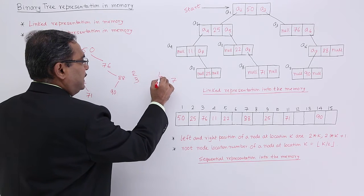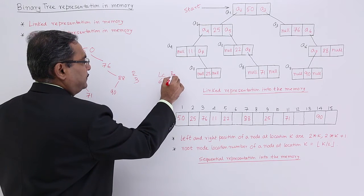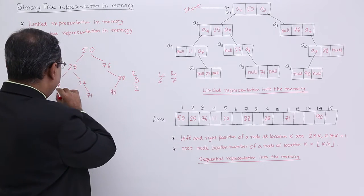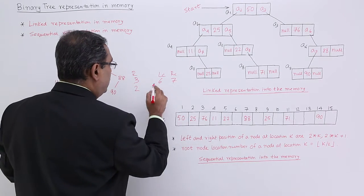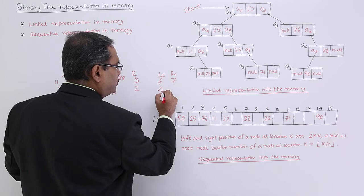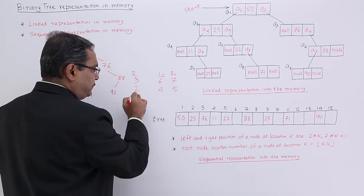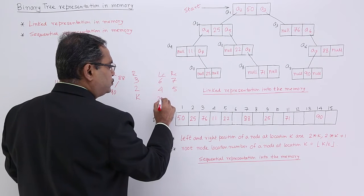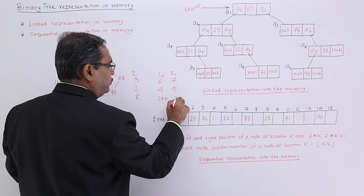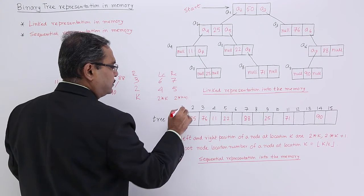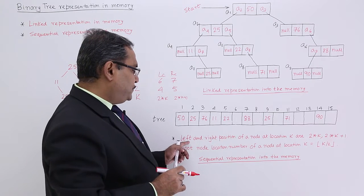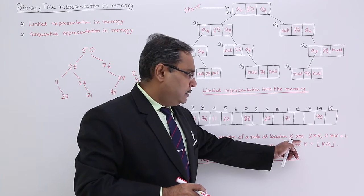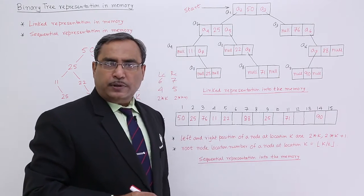This is the root, this is the left child and this is the right child. If the root is at position 2 (node 25), then the left child and right child 11 and 22 are found at locations 4 and 5. So, if the root is at the kth position, then the left child will be at 2*k and the right child will be at 2*k + 1. That is a very famous logic.